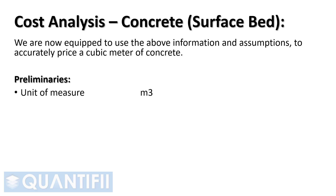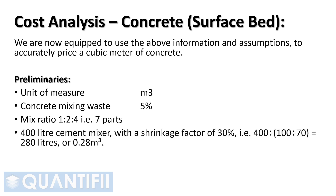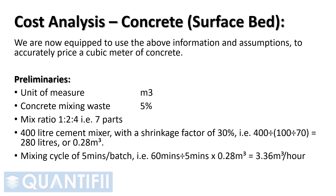We are now equipped to use the above information and assumptions to accurately price a cubic meter of concrete in a surface bed. Let's assume the following: unit of measure cubic meters; concrete mixing waste 5%; mix ratio 1 to 2 to 4, that is 7 parts; 400 liter cement mixer with a shrinkage factor of 30%, that is 400 divided by (100 divided by 70), which equals 280 liters, or 0.28 cubic meters; mixing cycle of 5 minutes per batch, that is 60 minutes divided by 5 minutes, multiplied by 0.28 cubic meters, which equals 3.36 cubic meters per hour.